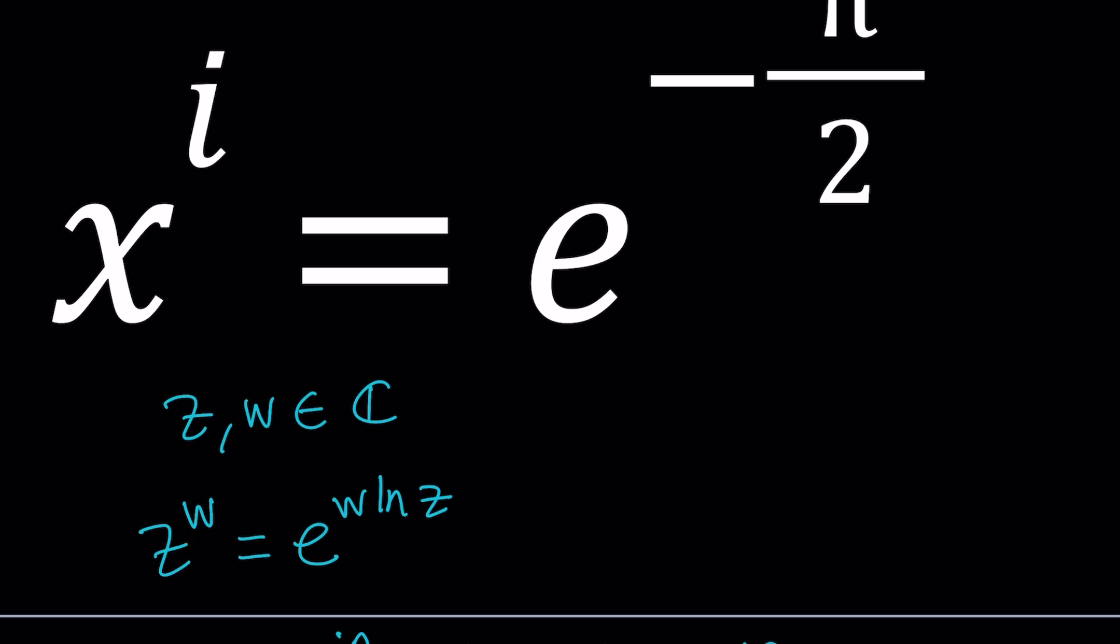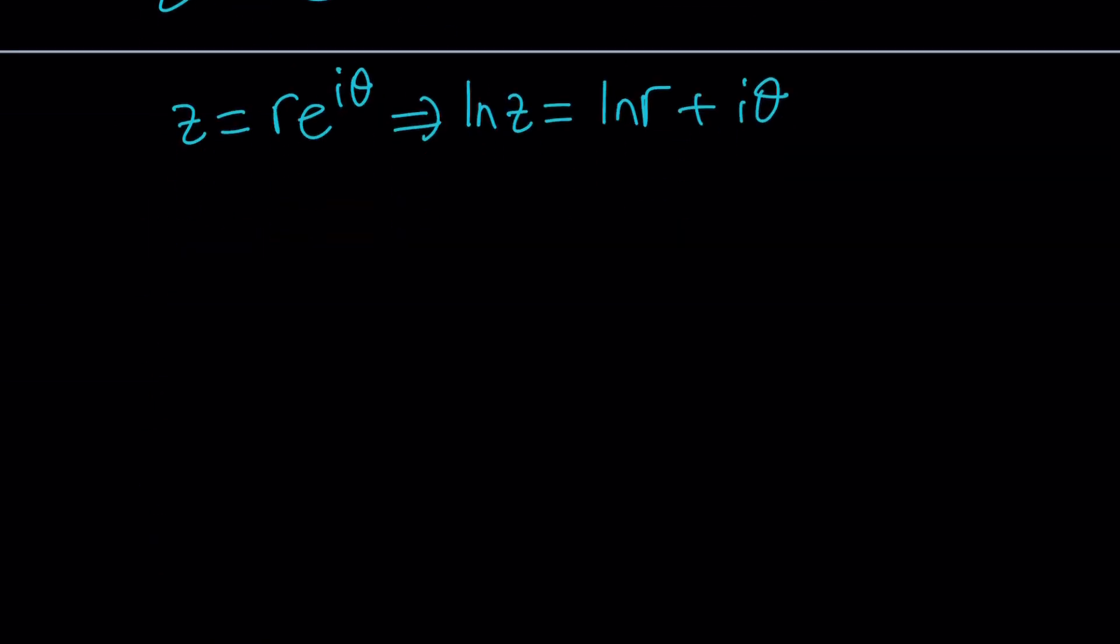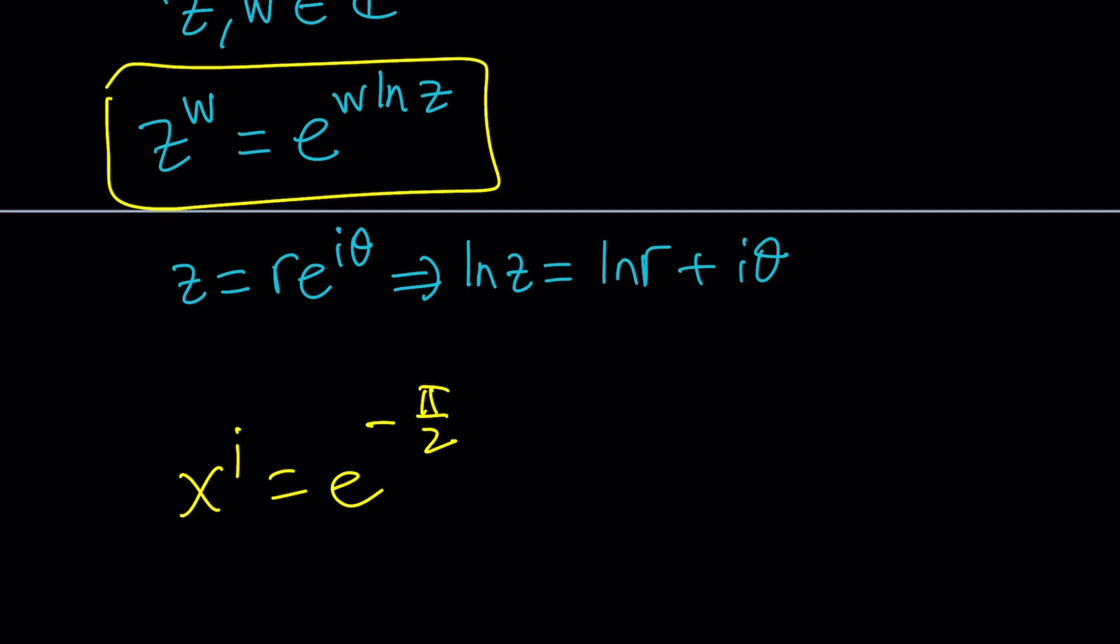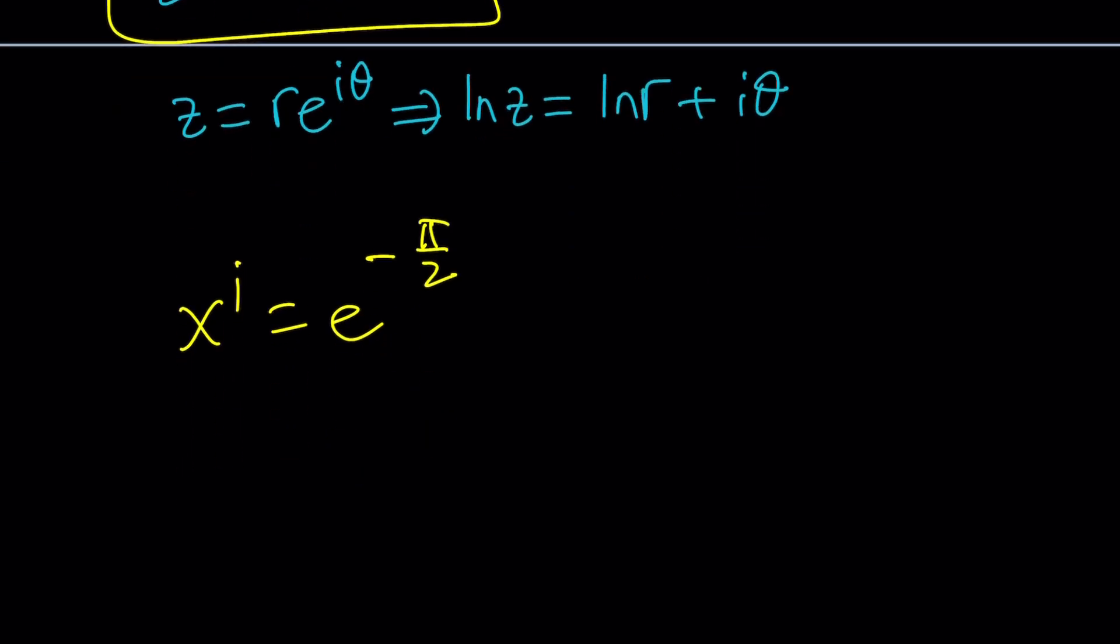Let's get to work right away. We have x^i = e^(-π/2). I'm going to use the definition right here, z^w. If you replace z with x and w with i,